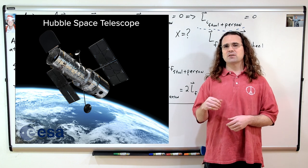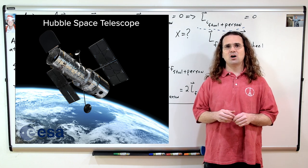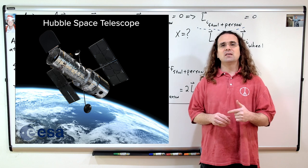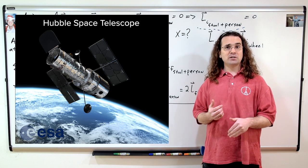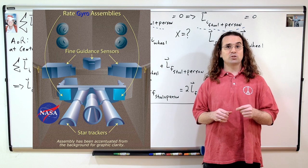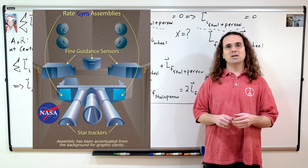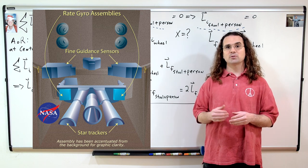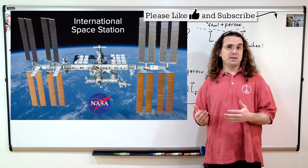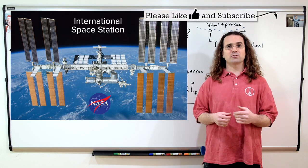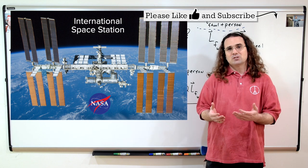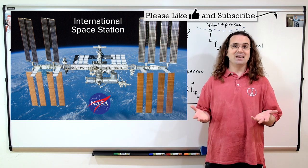In space there is nothing to push off of to cause a net external torque on the telescope. Therefore, there are near frictionless gyroscopes constantly spinning on the satellite, which can be rotated, which in turn rotates the direction the Hubble Space Telescope is pointing. The International Space Station also has onboard gyroscopes which are used to control its rotation, which is pretty darn cool.